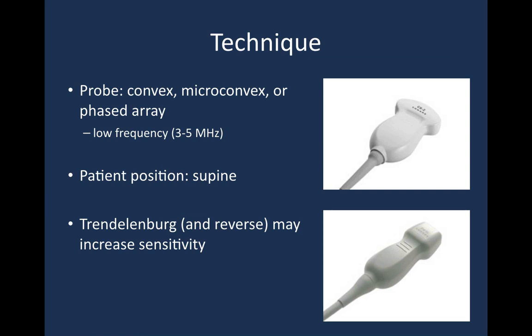In terms of how we do the exam, you need the right equipment. Select the proper probe — you don't want to use a linear probe. You want a convex, micro-convex, or phased array probe. In our department, most machines have a phased array transducer; one or two have a curvilinear transducer. You want the patient in the supine position. Ideally, put the patient in Trendelenburg when looking in the hepatorenal space or around the spleen — this increases sensitivity by getting small amounts of fluid to collect up around the diaphragm, liver, and spleen. When looking in the bladder and pelvis, put the patient in reverse Trendelenburg so fluid collects in the pelvic area around the bladder and in the rectovesical or rectouterine pouch.